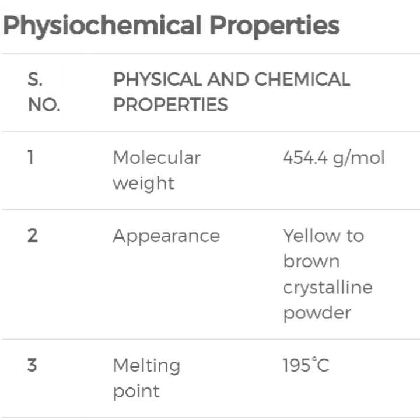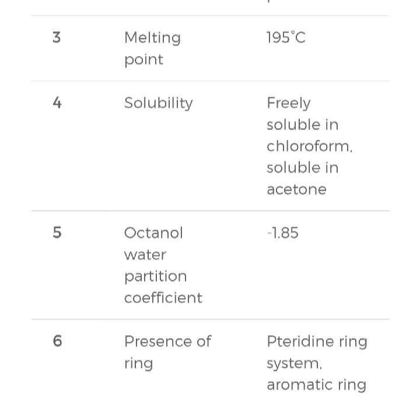The physicochemical properties of Methotrexate are as follows. The molecular weight of Methotrexate is 454.4 grams per mole. Its appearance is a yellow to brown crystalline powder and the melting point is 195 degrees Celsius. Methotrexate is freely soluble in chloroform and soluble in acetone.